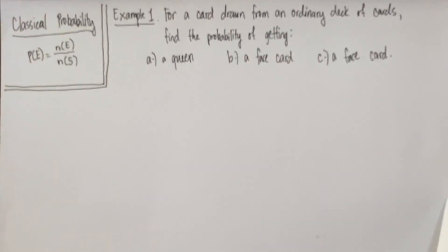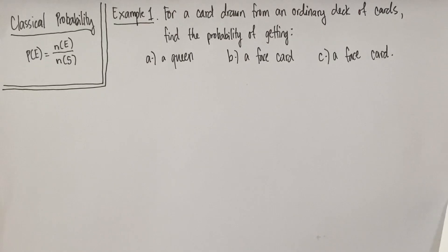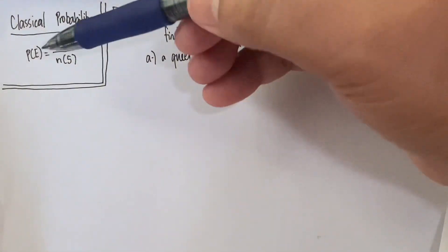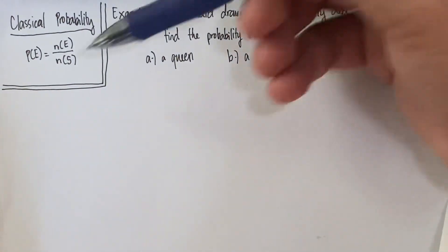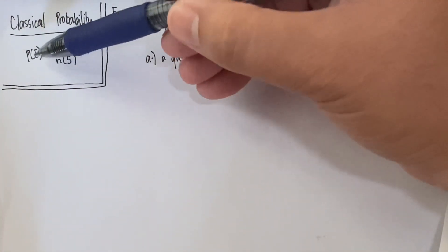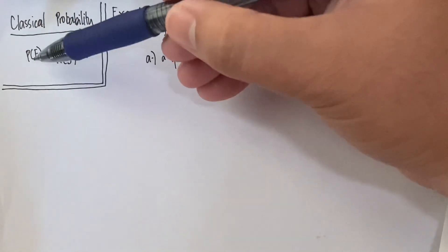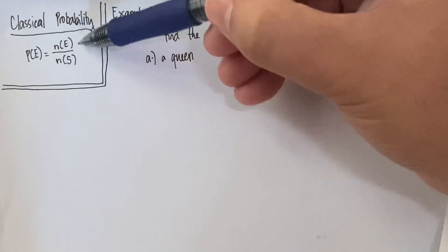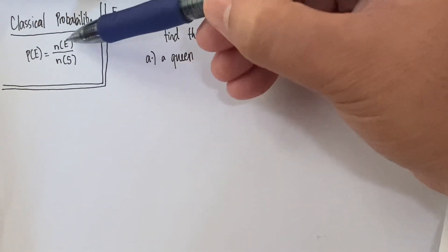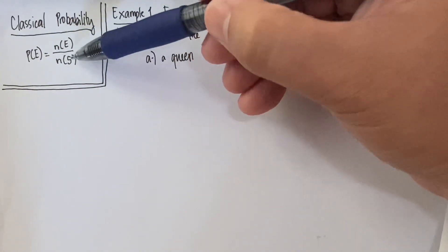Okay, hello there, everyone. And in this video, we're going to talk about one example on classical probability. So we want to recall that classical probability has this formula: the probability of E, we read this as the probability of E is equal to the cardinality of E divided by the cardinality of the sample space.